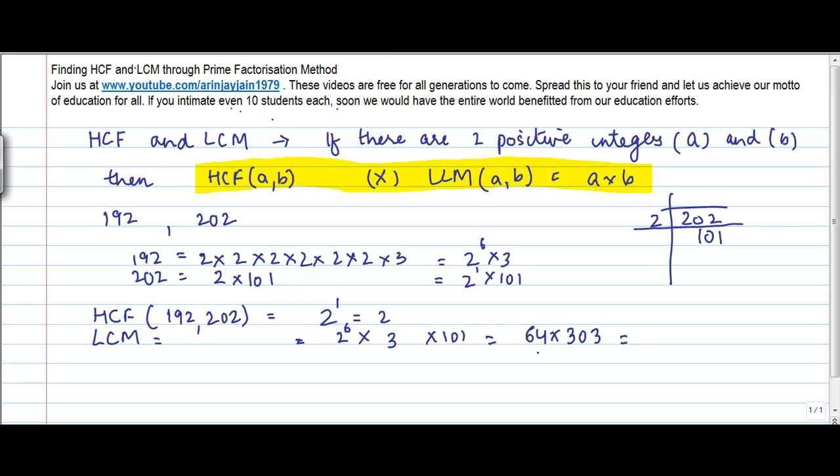So this gives us 64 times 303. And when you do the calculations for this, the number that it comes to is equal to 19,392. So the LCM is 19,392.